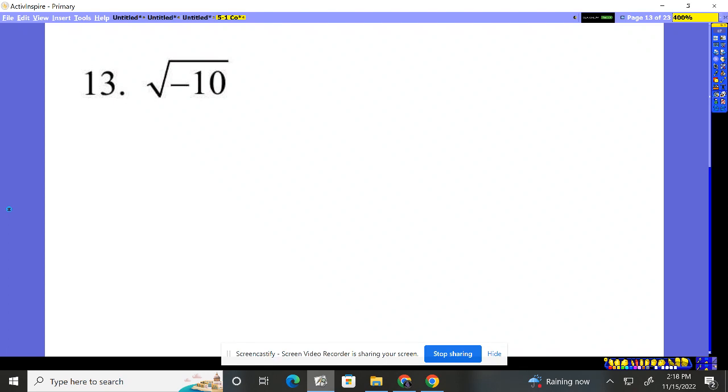Number 13, want us to simplify the square root of negative 10. Well, that's simply a negative 1. That's what the negative piece is. 10 is just a 2 and 5, so there's no pair. Nobody's going to come out.